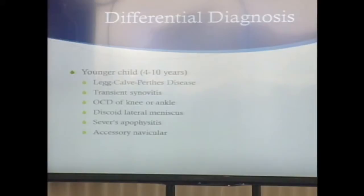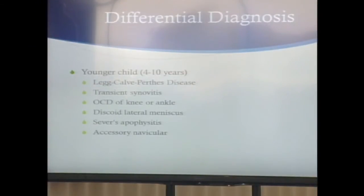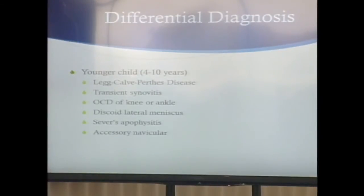In younger children, the differential narrows to Perthes disease, transient synovitis, OCD — osteochondritis dissecans, which can occur in the knee on a femoral condyle or in the ankle and talus bone. A discoid lateral meniscus could cause pain, Sever's apophysitis, as well as an accessory navicular.